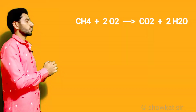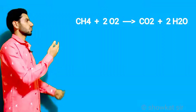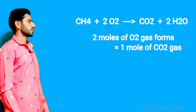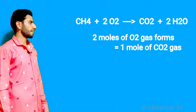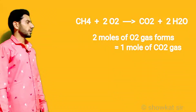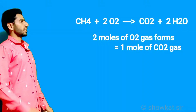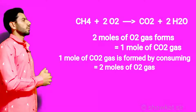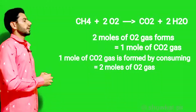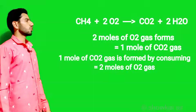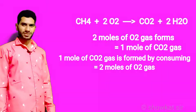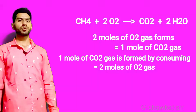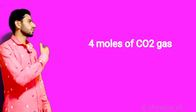In this balanced chemical equation, what we observe is that 2 moles of oxygen form 1 mole of carbon dioxide. In other words, we can say that 1 mole of carbon dioxide is formed by consuming 2 moles of oxygen. So now, since we are having 4 moles of carbon dioxide...